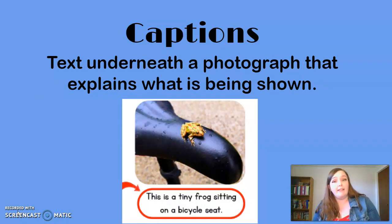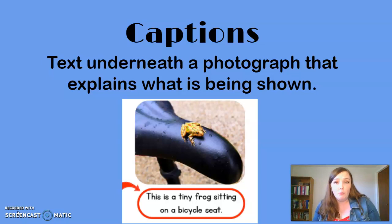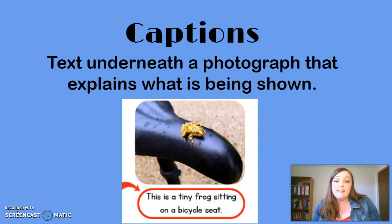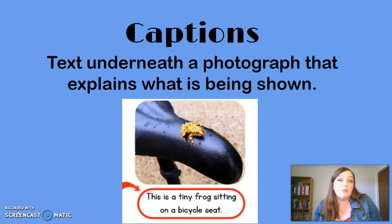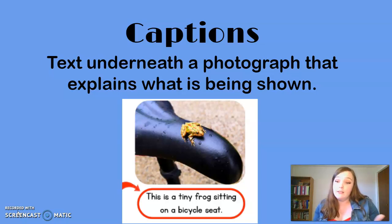The next thing you might find in a nonfiction text is a caption. Captions are text found underneath a photograph that explain what is being shown by the photograph. Looking at this example, we can see a photograph of a frog, and the caption tells us it's a tiny frog sitting on a bicycle seat. Sometimes captions just explain exactly what the picture shows, and sometimes you can learn more information just from reading the caption — it really depends on what the author wanted to use their caption for.